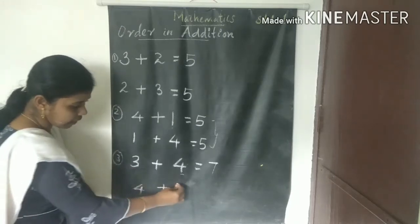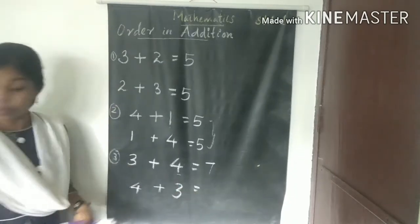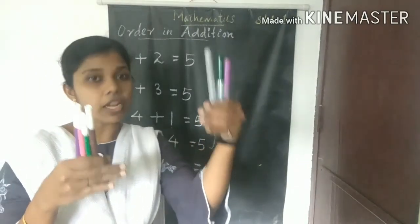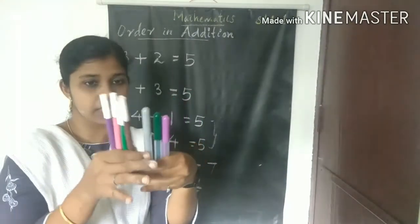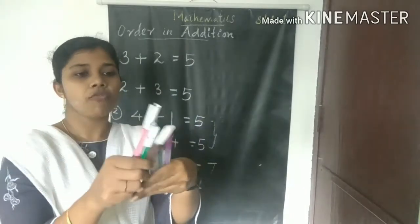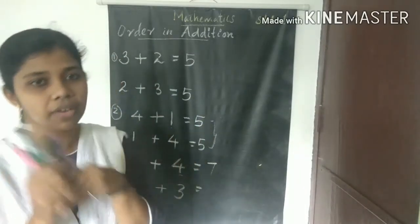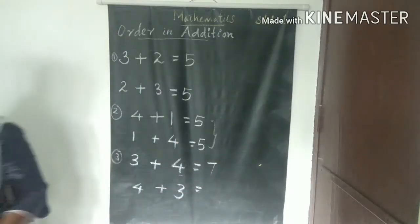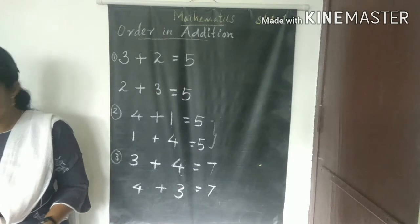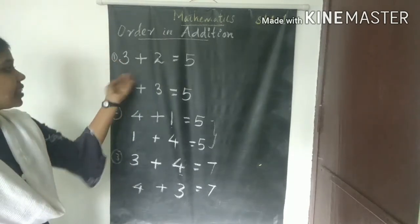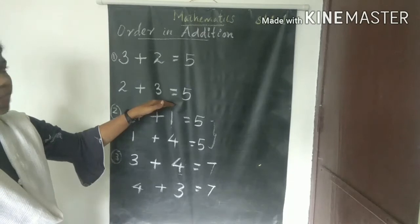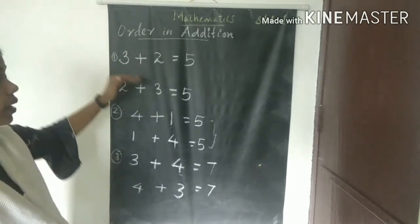Now interchanging the numbers — the second number goes in the first place, the first number in the second place — so four plus three. Four pens in the right hand, three pens in the left hand. Total taken together: one, two, three, four, five, six, seven — seven pens, no change. Answer is the same. This is the order property in addition.